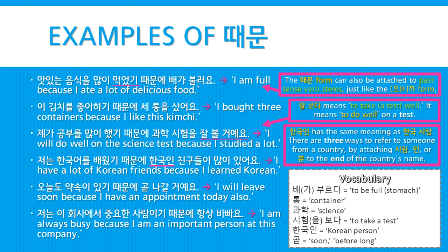저는 한국어를 배웠기 때문에 한국인 친구들이 많이 있어요 — 'I have a lot of Korean friends because I learned Korean.' 한국인 has the same meaning as 한국 사람, meaning 'Korean person.' There are three ways to refer to someone from a country: by attaching 사람, 인, or 분 (if you want to be extra polite) to the end of the country's name. 오늘도 약속이 있기 때문에 곧 나갈 거예요 — 'I will leave soon because I have an appointment today also.' 저는 이 회사에서 중요한 사람이기 때문에 항상 바빠요 — 'I am always busy because I am an important person at this company.'